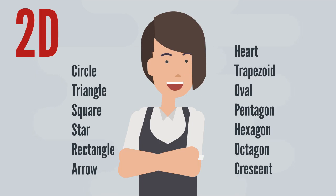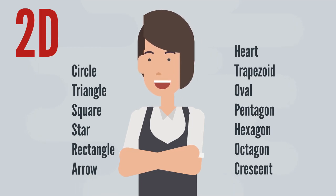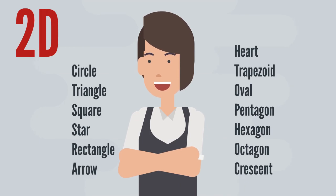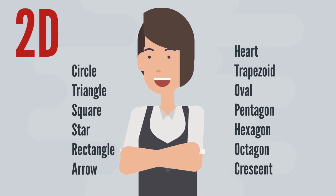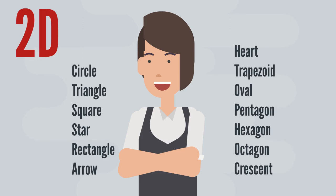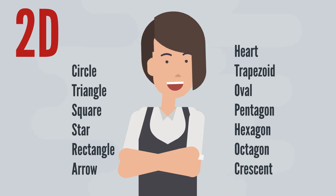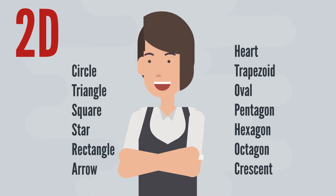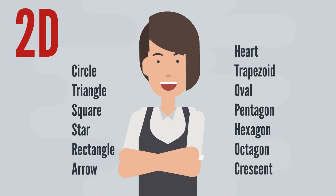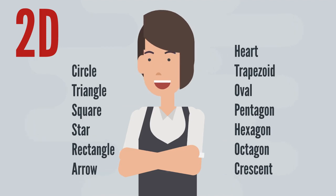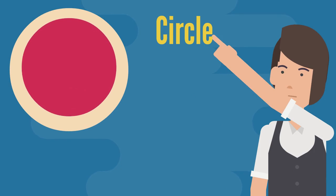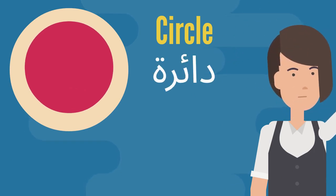These are the 2D shapes we're covering today: circle, triangle, square, star, rectangle, arrow, heart, trapezoid, oval, pentagon, hexagon, octagon, and crescent. If you think of any more 2D shapes we haven't covered, please put them in the comments below and we'll make sure to include them in a new video. Let's get started.